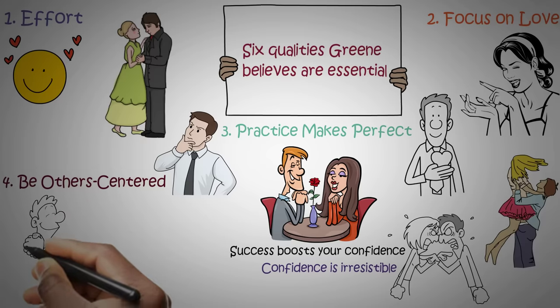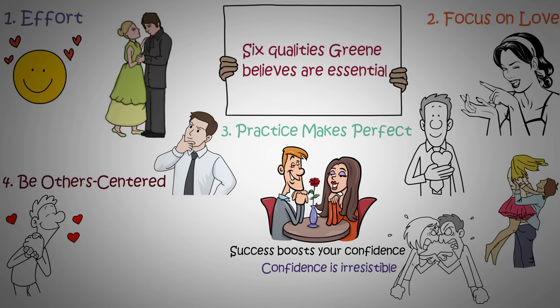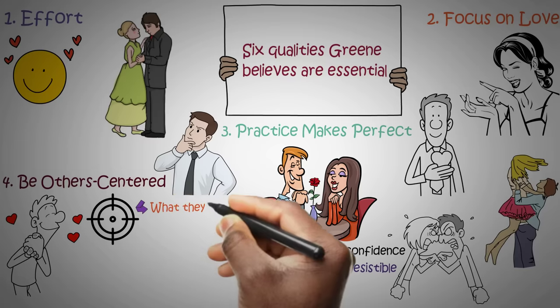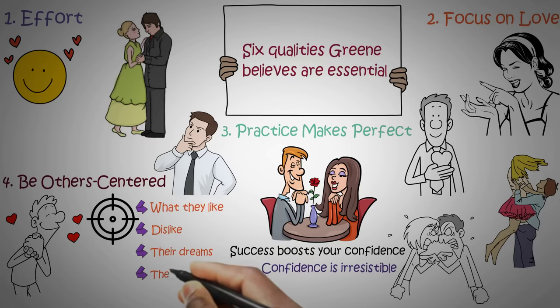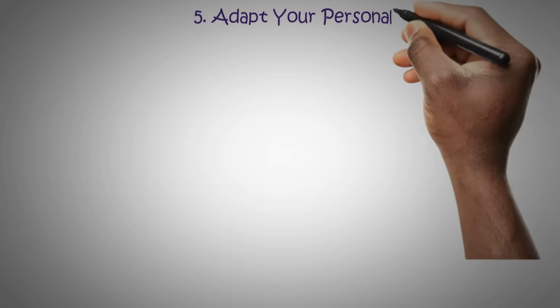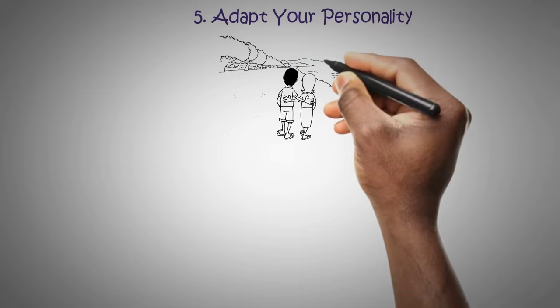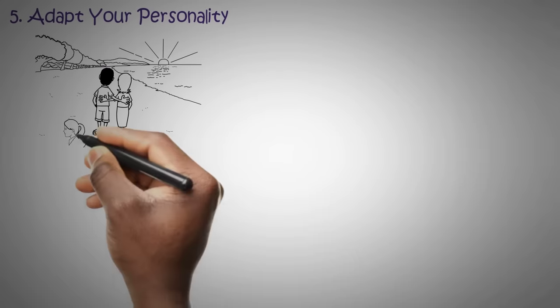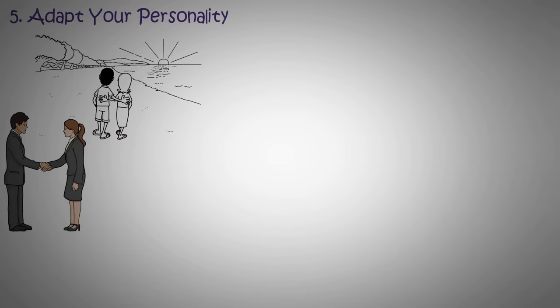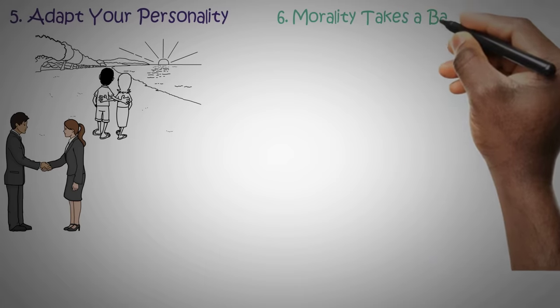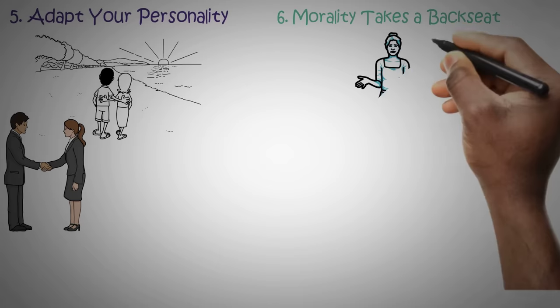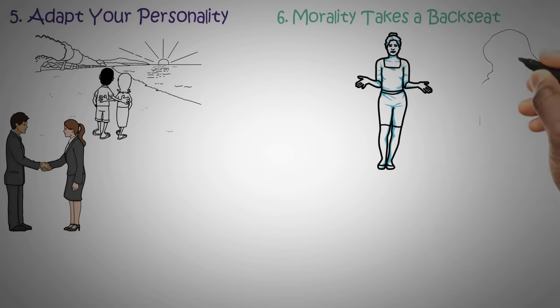Four: Be others-centered. Successful seducers don't talk endlessly about themselves. Instead, they're curious about their target: what they like, dislike, their dreams, and their preferred social and romantic interactions. Five: Adapt your personality. Seducers are chameleons. They adjust their personalities to match what their target finds appealing. Six: Morality takes a back seat. Seducers don't agonize over whether their actions are right or wrong. It's all part of the game to them, a game to get what they want.